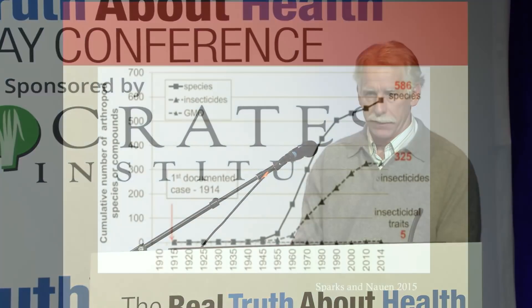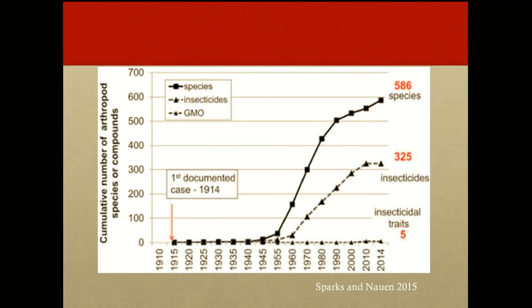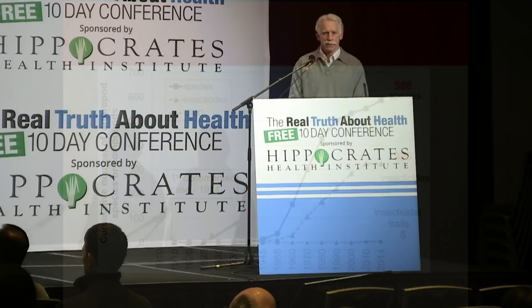Pesticides and fertilizers had immediate effects on farms. Sometimes within a single year, the effects of pesticide overuse could be seen. The first year, a pound of DDT might completely wipe out a target pest, but by the second year, maybe two pounds were necessary. Within five years, ten pounds might be necessary.